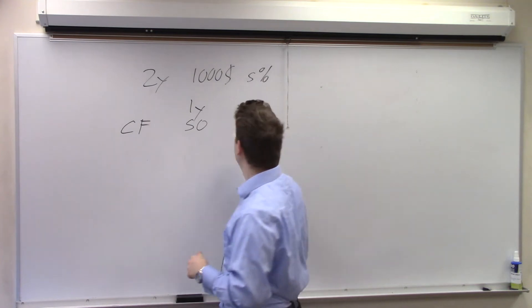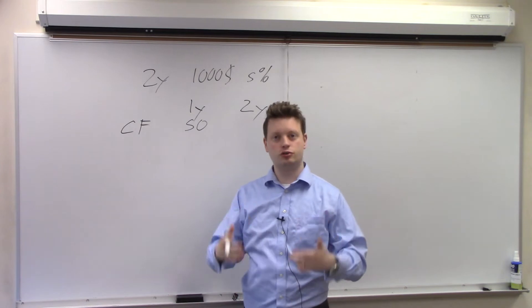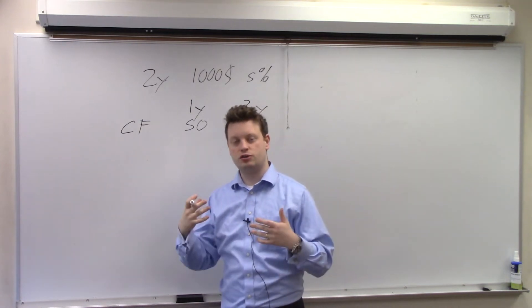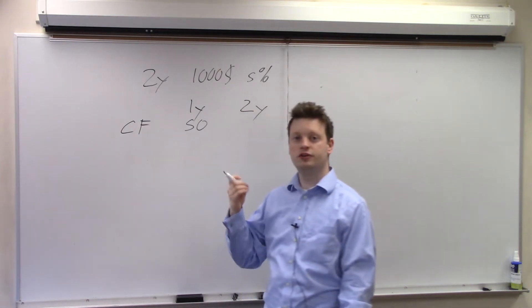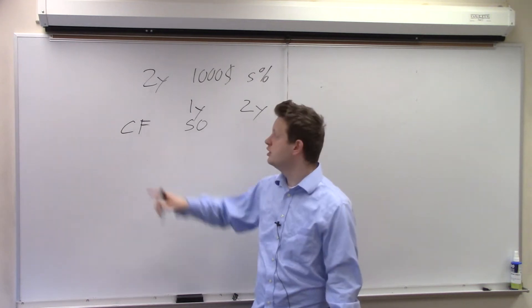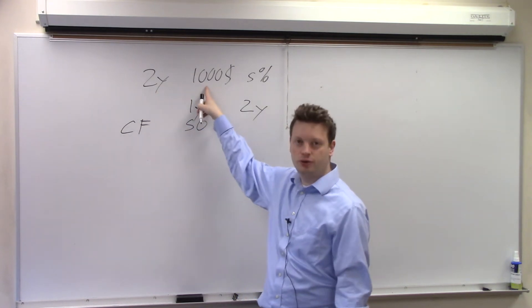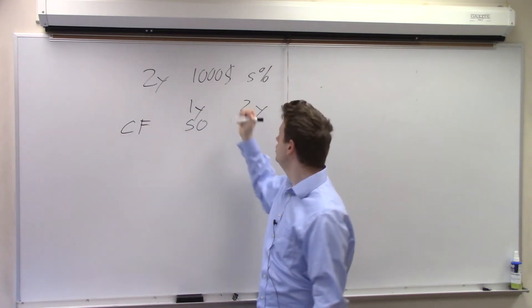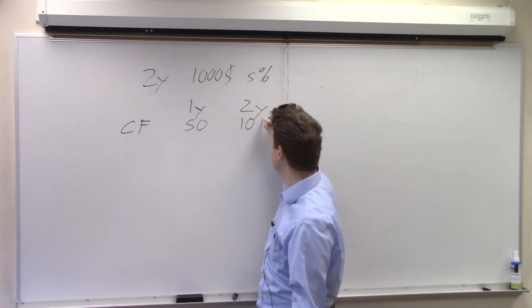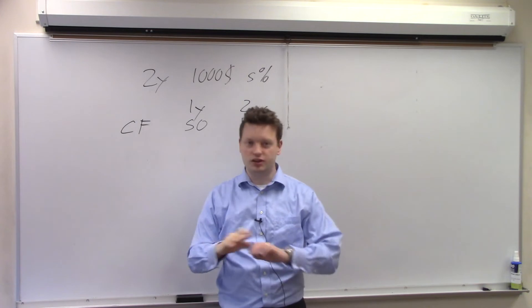Next I wait a year and at the end of year two I will receive interest again, so another $50. But in addition to the $50, since this is a two-year bond I will also be paid the $1,000 back. So I end up with $1,050 and with that all payments are done.